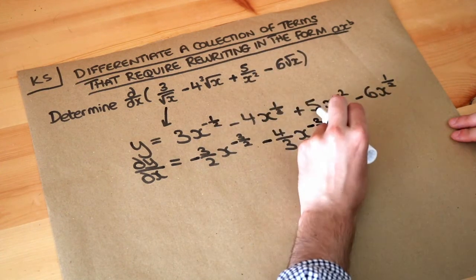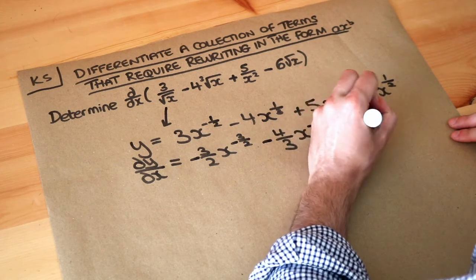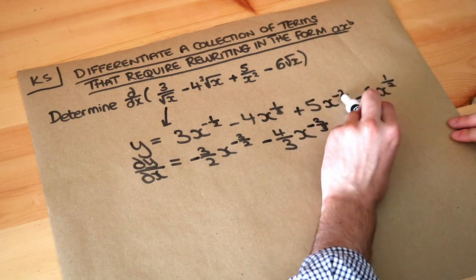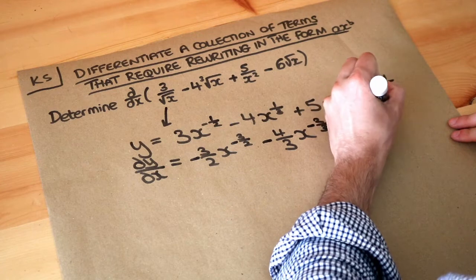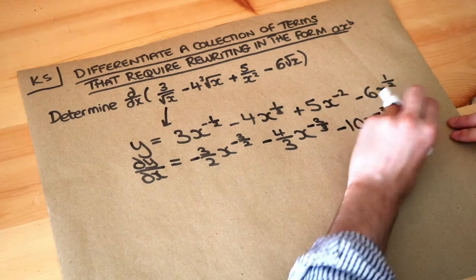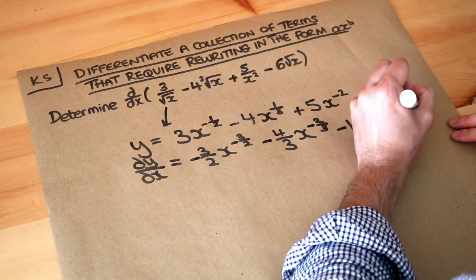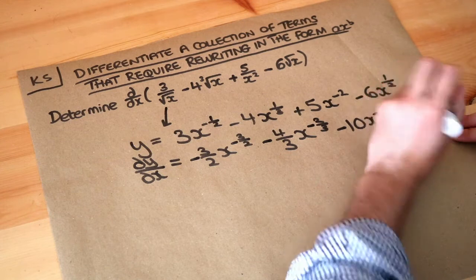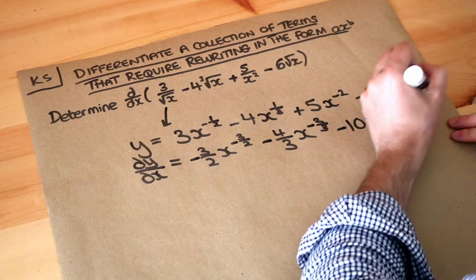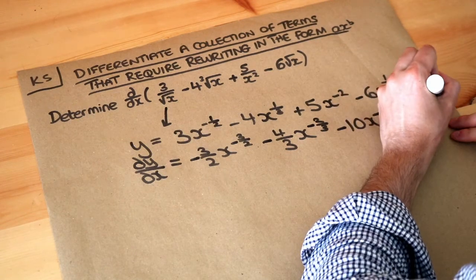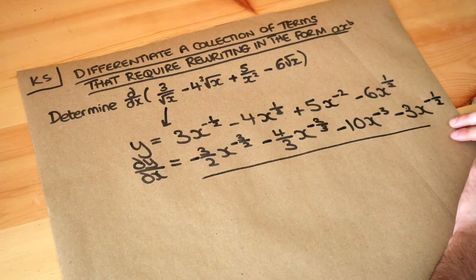Next, 5 times minus 2 is minus 10, and reducing the index by 1 takes minus 2 down to minus 3. Finally, minus 6 times a half is minus 3, and reducing the power by 1 takes a half down to minus half. And we are done.